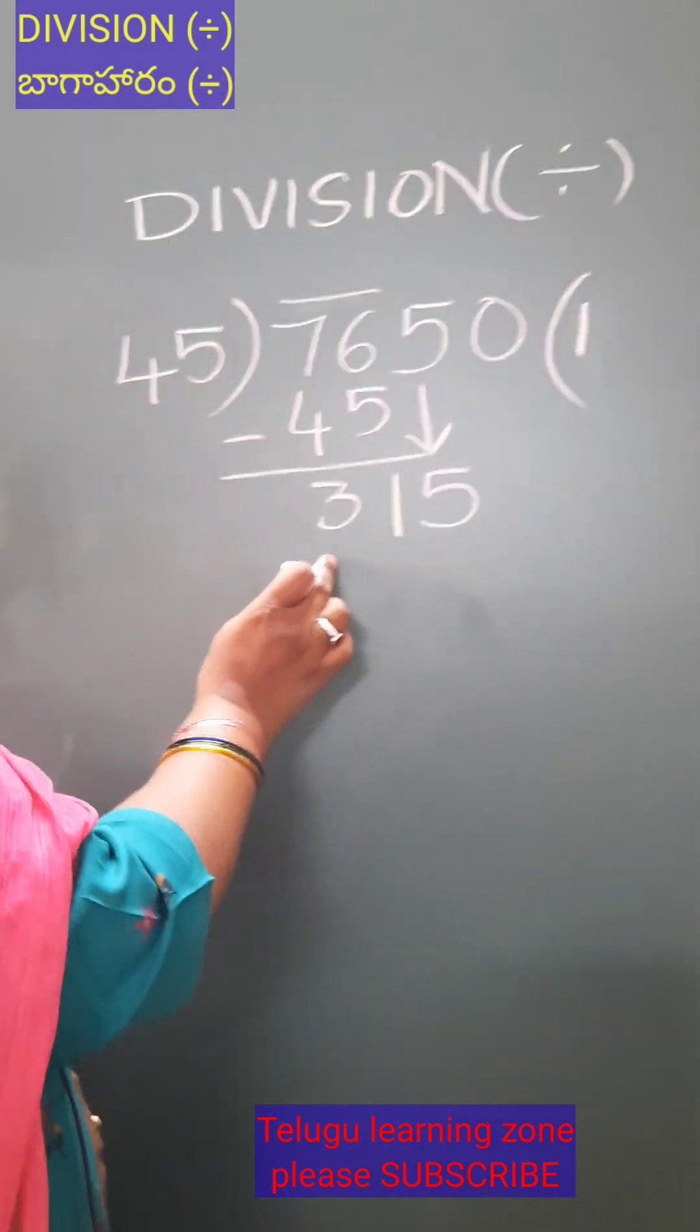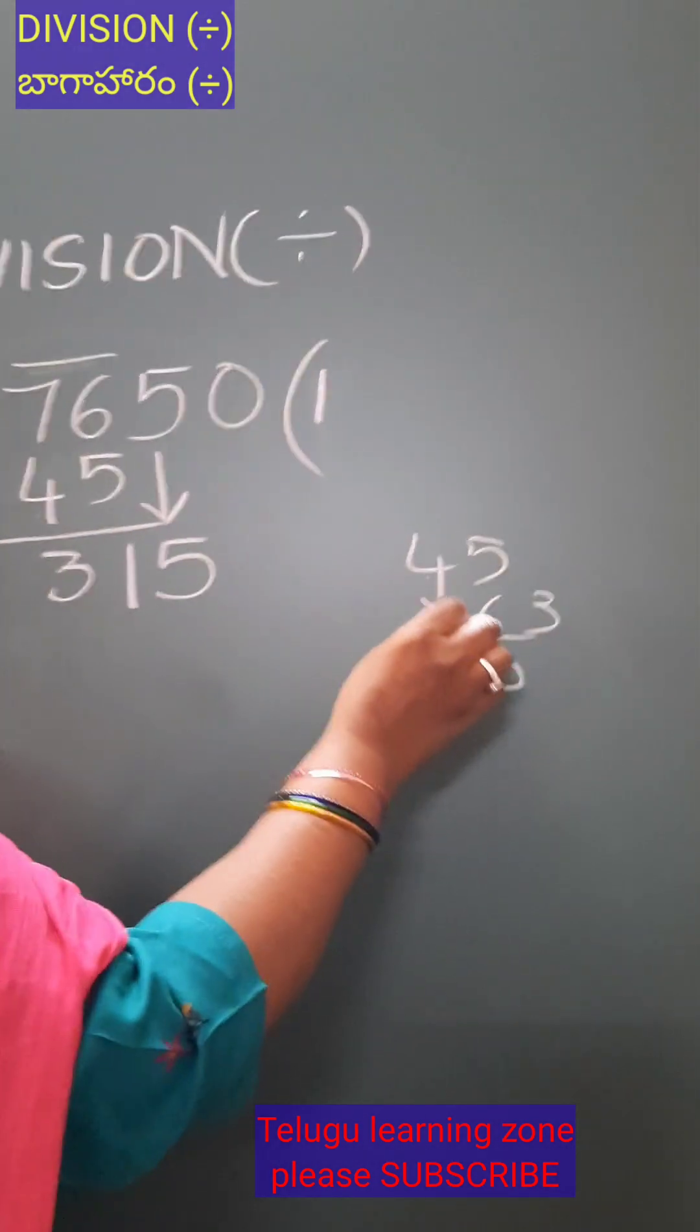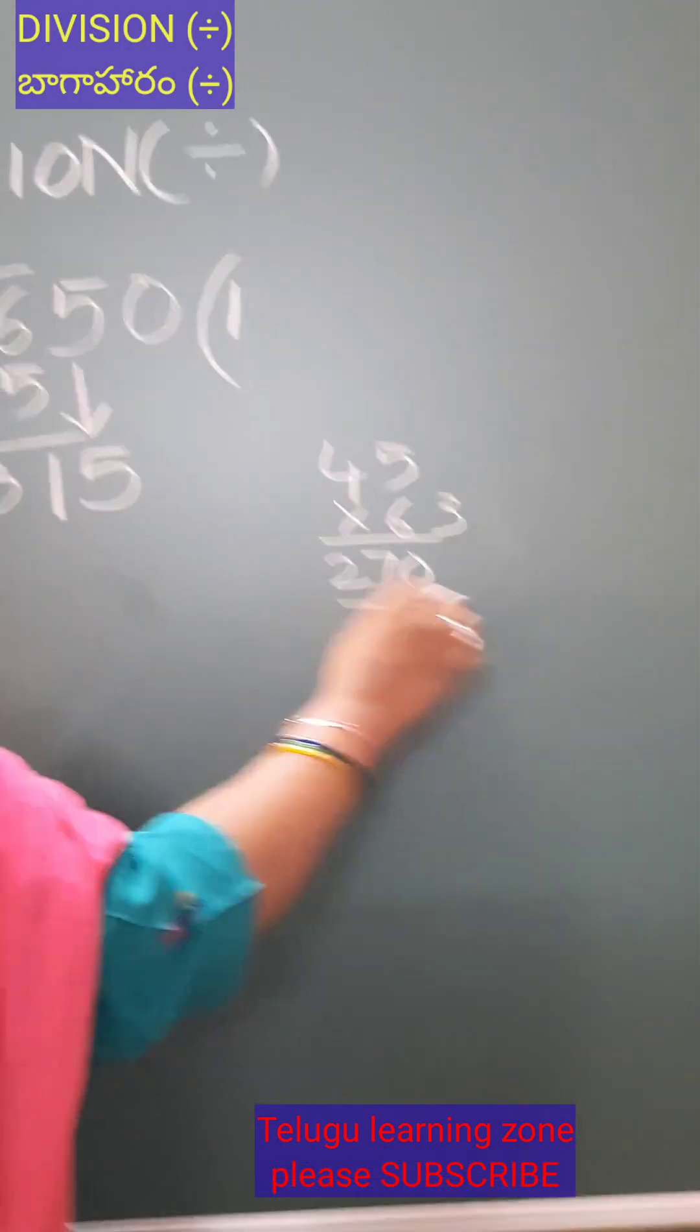In 315, 45 how many times? Let's try 6: 6 fours are 24, plus 3 is 27. No,